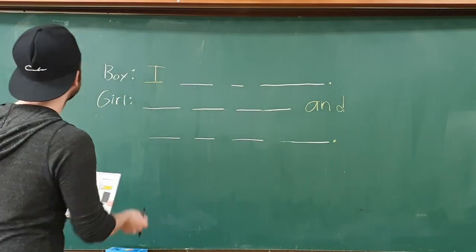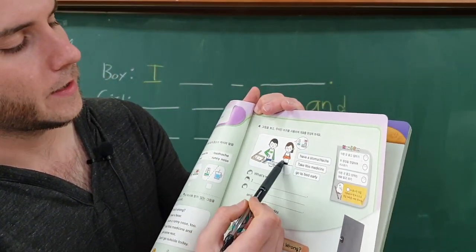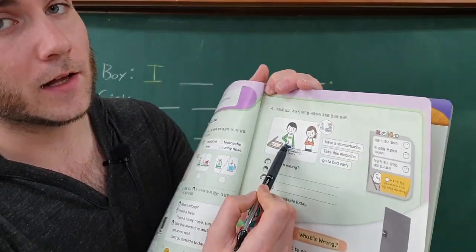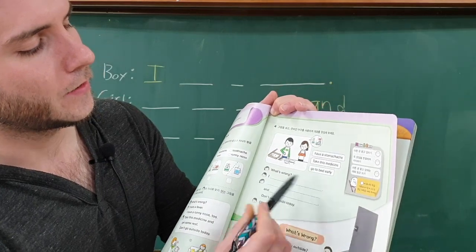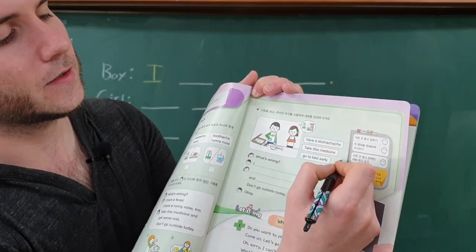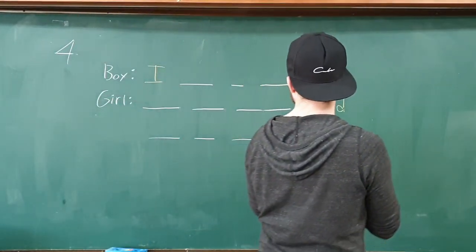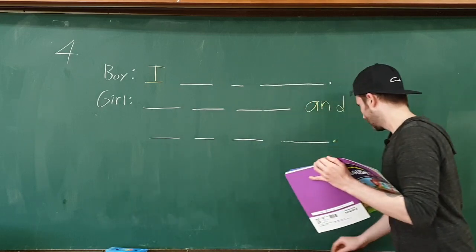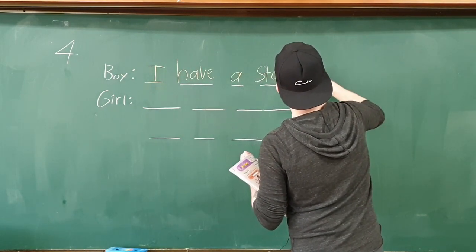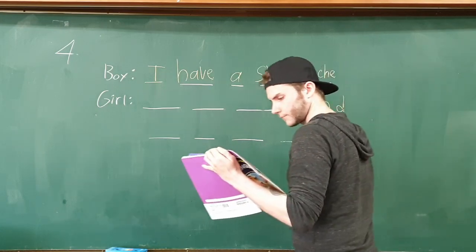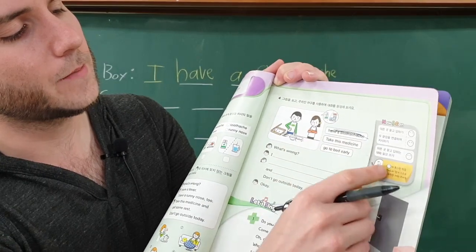I finished preparing activity four, so let's check out the writing part. We have a picture of a boy and a girl talking — the boy is not looking too well. She asks 'what's wrong,' and the boy says 'I have a blank.' We have to take these sentences and put them into the conversation. The answer is going to be 'I have a stomach ache' — that's our sentence from our sentence bank. We'll cross that out.